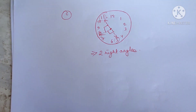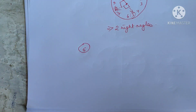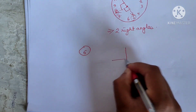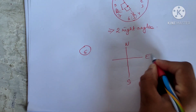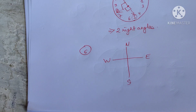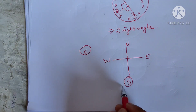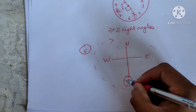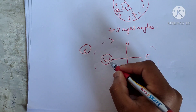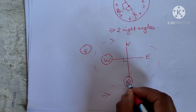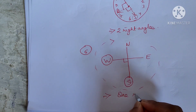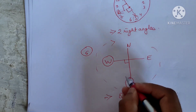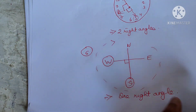Number six is similar. We have to find how many right angles are made using compass directions — north, south, east, west. For part (a), we are standing at south and turning clockwise to west. Clockwise means this direction. From south going clockwise, we reach west after one right angle. So the answer is one right angle. If we go from south to north, we make two right angles.